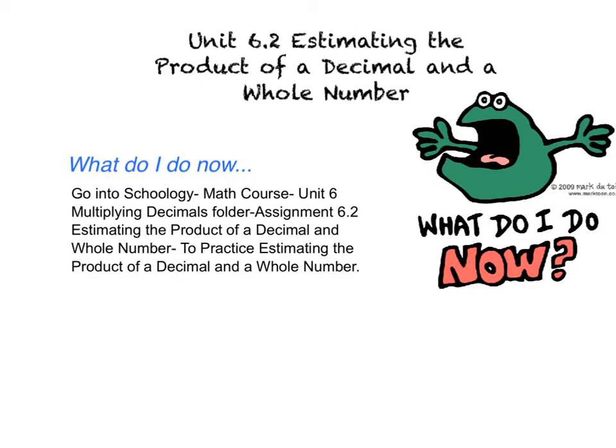Okay, now that you have seen the two different options for estimating the product of a decimal and a whole number, you are going to choose whichever option you feel is going to work best for you. Then you're going to go into Schoology. You're going to go into the math course. You're going to open up the folder unit 6, multiplying decimals. And then you're going to go to assignment 6.2, estimating the product of a decimal and a whole number.